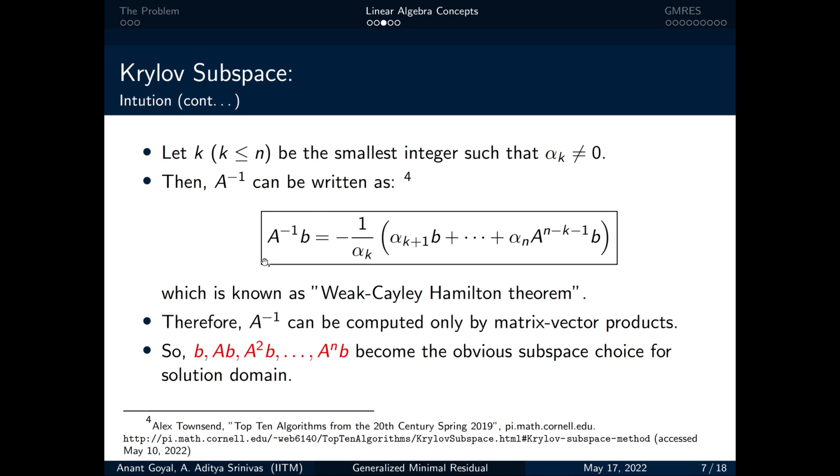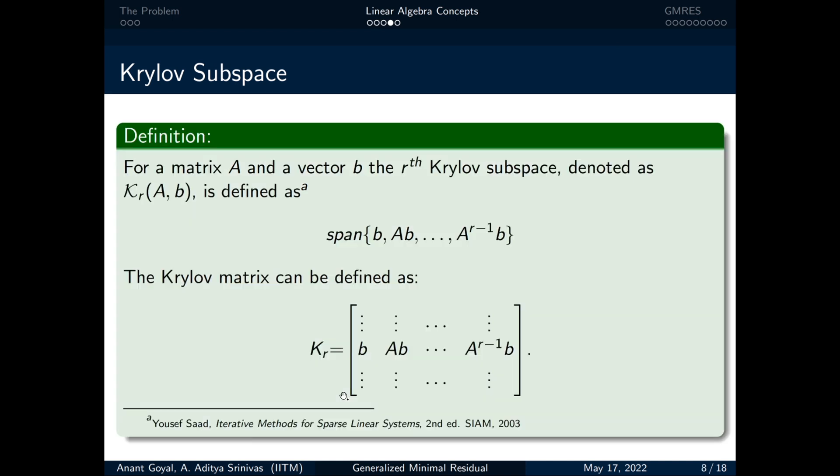Then A inverse can be computed using the weak Cayley-Hamilton theorem as shown. It is clear that A inverse can be calculated from the matrix vector products. Therefore, these vectors become an obvious choice for the solution subspace. Formally defining it, it is a space spanned by these vectors known as the Krylov subspace. The Krylov matrix is the matrix obtained by stacking these vectors as the columns of the matrix defined by K as shown.